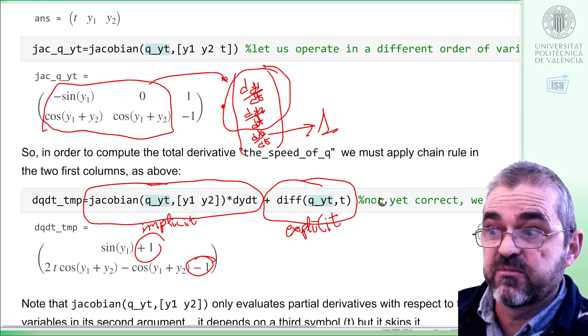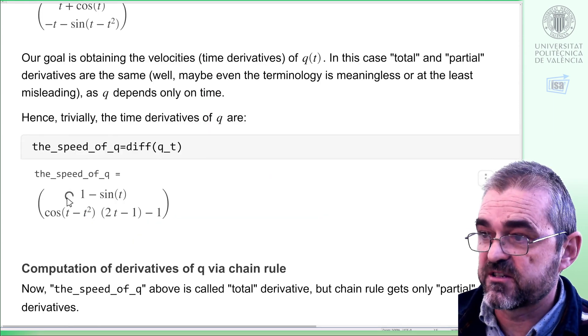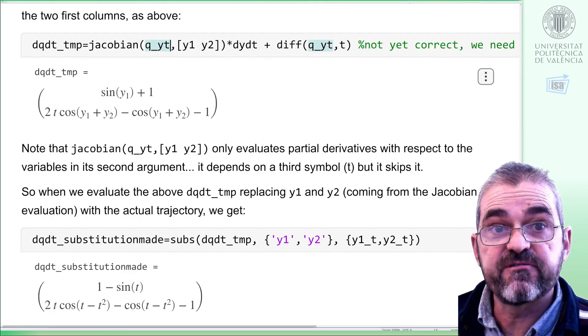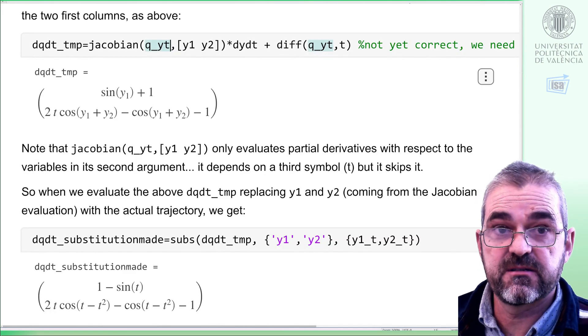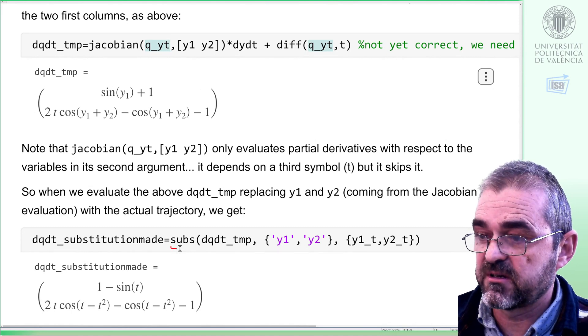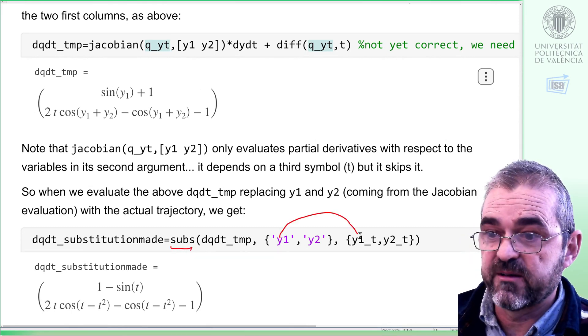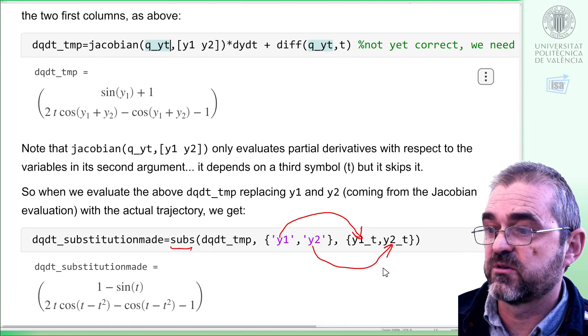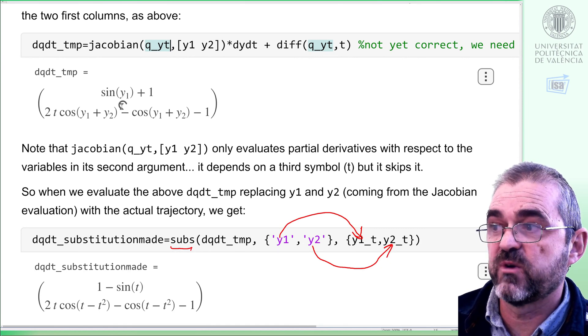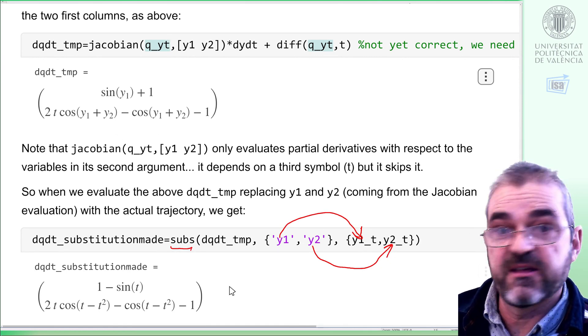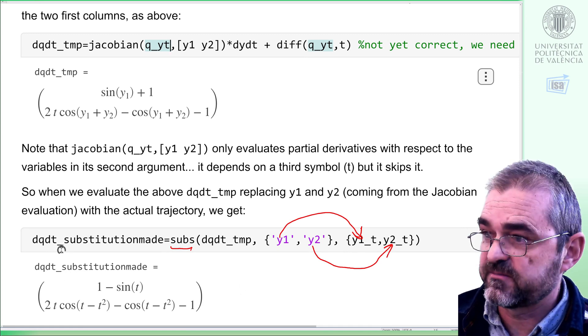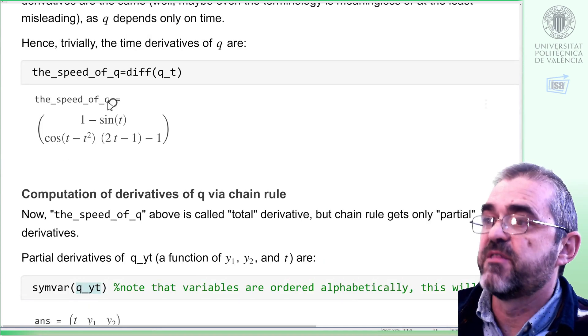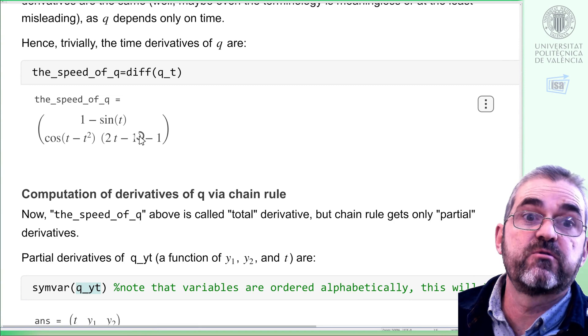But, as in the first example with chain rule, our goal is obtaining the speed of q, this kind of thing, but this only depends on time, so after multiplying the Jacobians, we need to do a symbolic substitution, and replace y1 by its actual explicit expression of time, and y2 as well, so once I replace y1 and y2 by the expression of time, then I have this kind of total derivative substitution made, and this is exactly equal to the speed of q we are actually trying to reach.